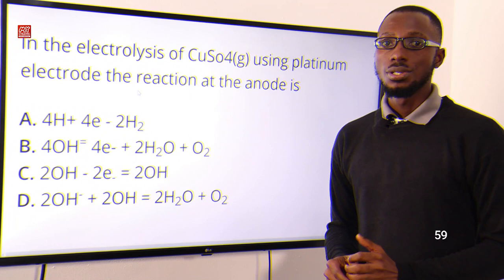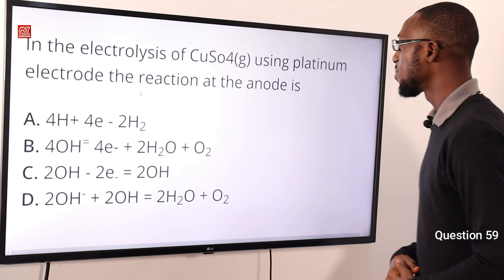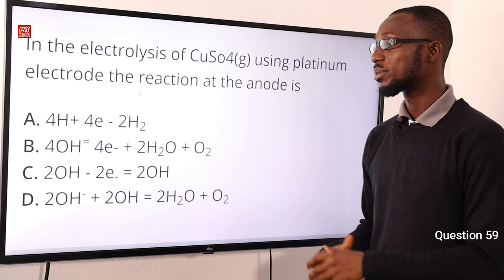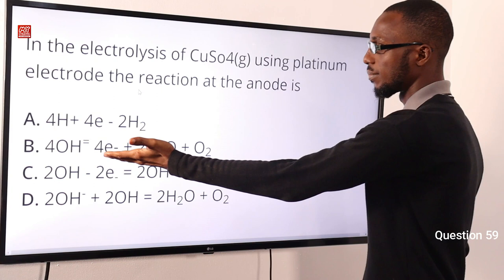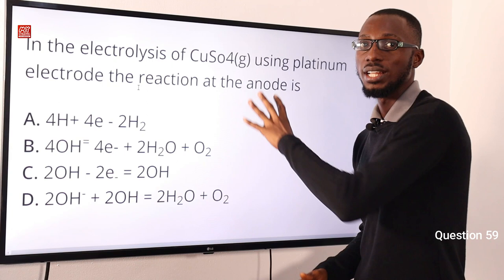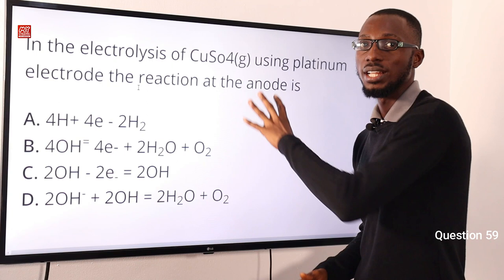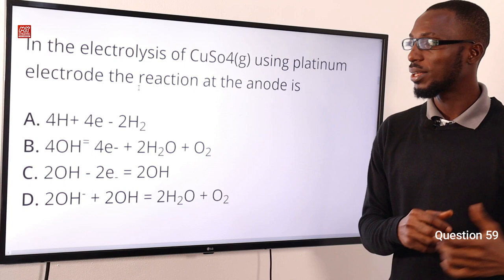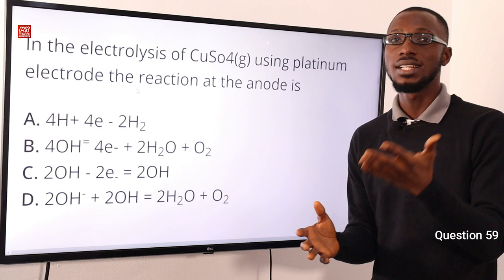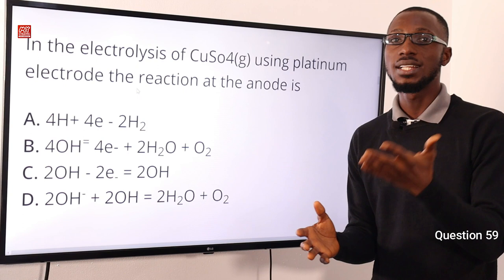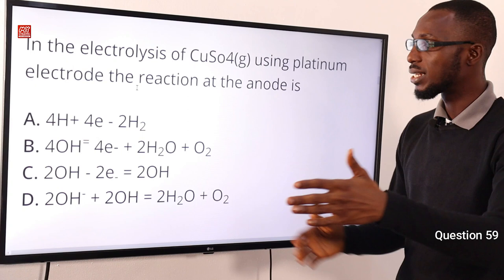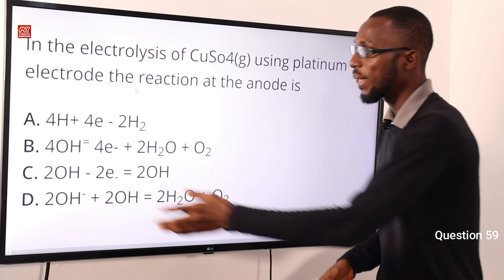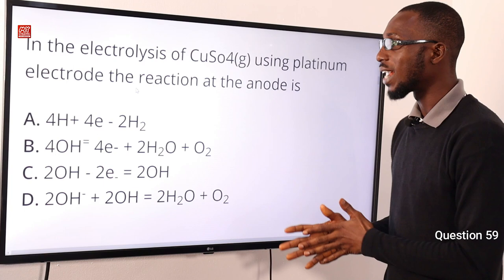Question 59: In the electrolysis of copper sulfate using platinum electrodes, the reaction at the anode — SO₄²⁻ and OH⁻ ions migrate to the anode, and the OH⁻ is preferentially discharged, giving oxygen gas. At the cathode, copper ions are preferentially discharged over hydrogen ions. The correct option is option B, representing the half-reaction at the anode.